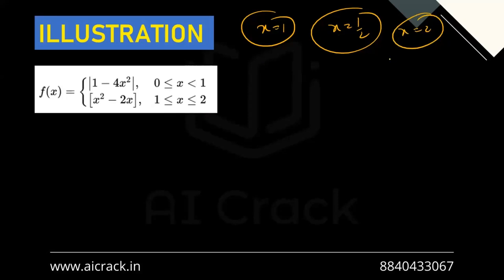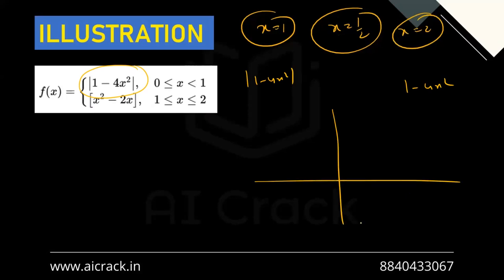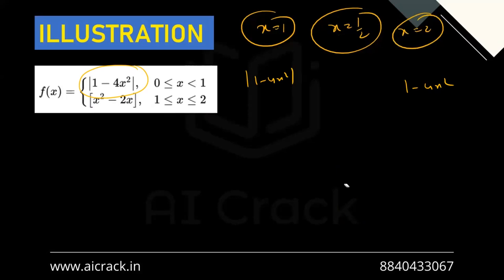Now let's plot the graphs. For the first part, we have |1 - 4x²|. Looking at 1 - 4x², the coefficient of x² is negative, so it is a downward-facing parabola.